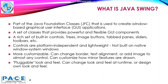What is Java Swing? Java Swing is part of Java Foundation classes that is used to create window-based graphical user interface applications. They are a set of classes that provide powerful and flexible GUI components. They are a rich set of built-in controls, such as trees, image buttons, tabs, panes, sliders, toolbars, etc.